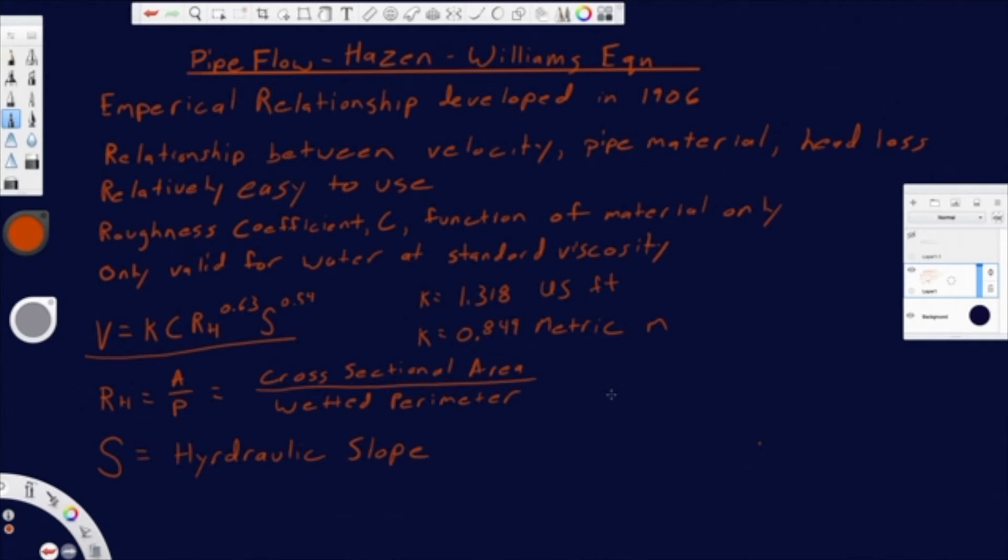And to be clear though, hydraulic radius is not used only in Hazen-Williams. It's used in different methods, different types of equations for open channel flow. And a lot of other things depend on hydraulic radius. But if you think about pipe, the cross-sectional area is just going to be your area of the pipe if it's flowing full.